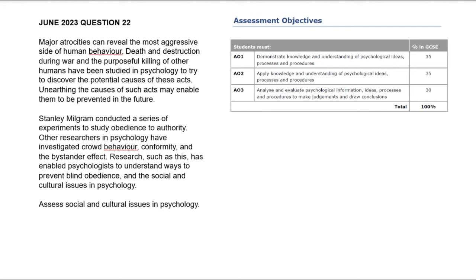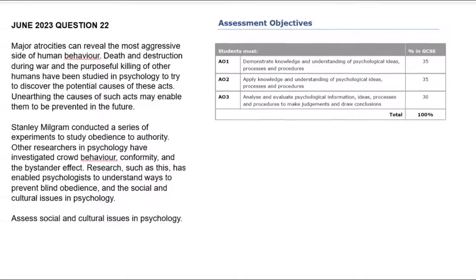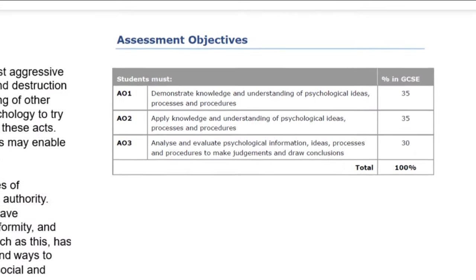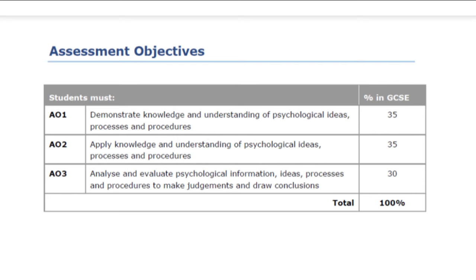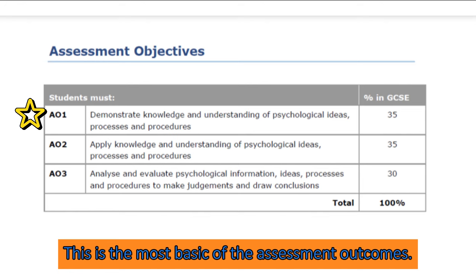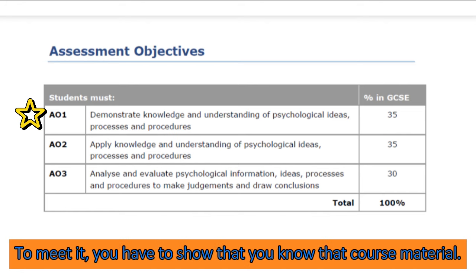We have the question on the left-hand side, and on the right are the assessment objectives as published by Edexcel. A nine-point question tests all three of those objectives, and a third of the marks is allocated under each objective. Assessment objective one: demonstrate knowledge and understanding of psychological ideas, processes, and procedures. This is the most basic of the assessment outcomes — to meet it, you have to show that you know the course material.